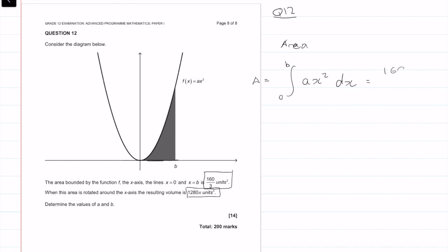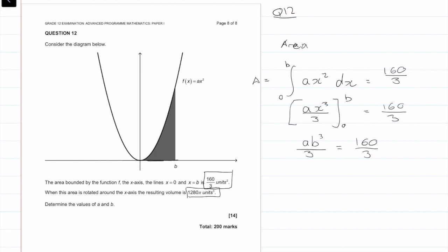That is equal to 160 over 3 units. So let's deal with the integration. If we integrate this, we get ax cubed divided by 3, evaluated from 0 to b, equal to 160 over 3. Substituting b in, we get ab cubed divided by 3 minus 0, equal to 160 over 3. Therefore, ab cubed is equal to 160. That is going to be our first equation.